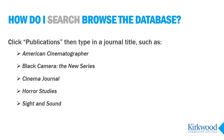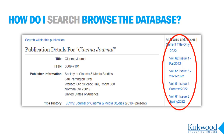Once you select a title, you will see a list of available years along the right side of the page. Expand any of these, then select an issue to browse. You'll be taken to a list of articles from that issue — scan through titles for anything that sparks your interest.